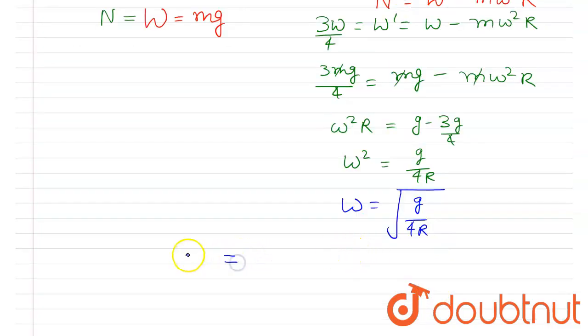and R is 6400 kilometers, so I will convert it into meters by multiplying it with 10³.